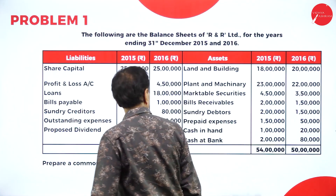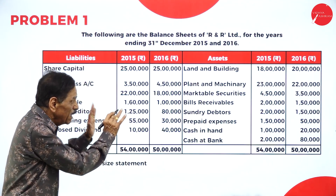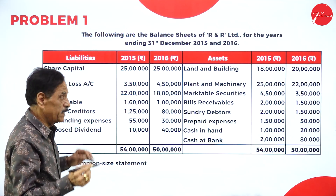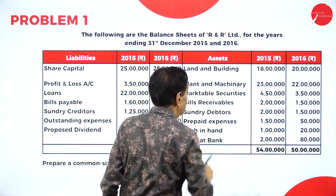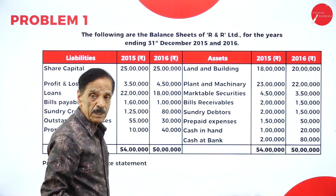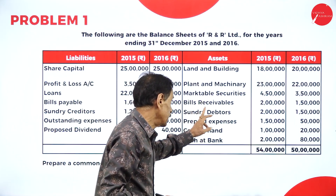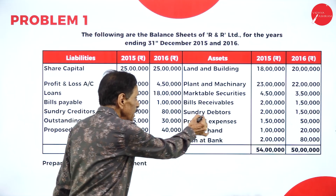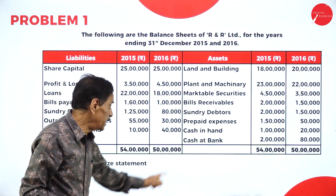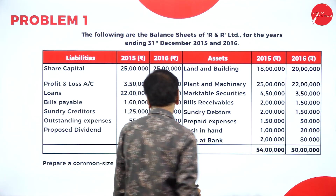Following are the balance sheet of the company for the year's ending. You have to identify which are the fixed assets and which are the current assets. Land and building is a fixed asset, plant and machinery is a fixed asset. Marketable security, BR, debtors, prepaid expenses, cash in hand, and cash at bank are all current assets.